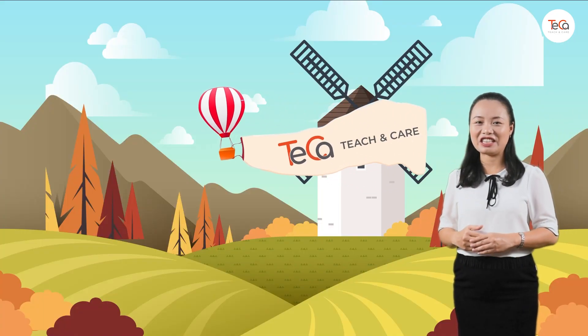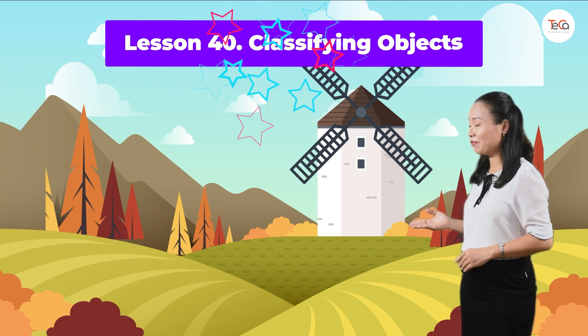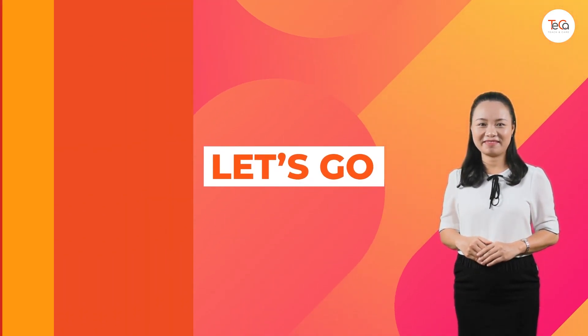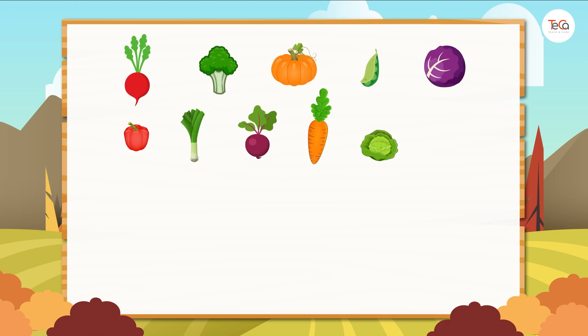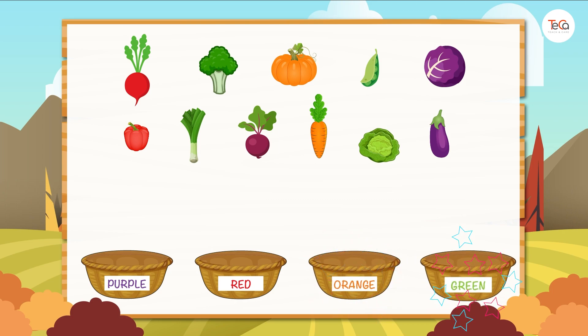Hello little angels! In this lesson we are learning to classify objects. Ready? Let's go! Look, we have a bunch of vegetables — they are all different. Now we classify this bunch into four groups: a purple group, a red group, an orange group, and a green group.